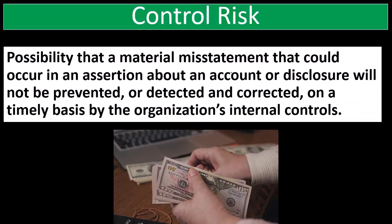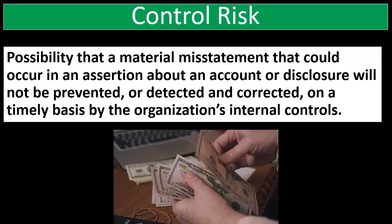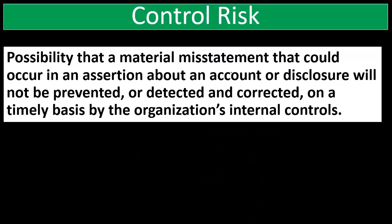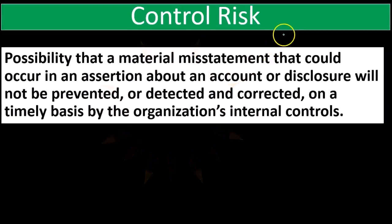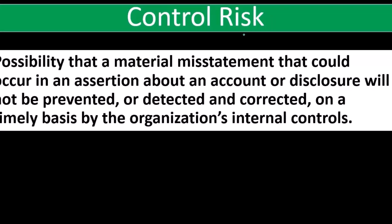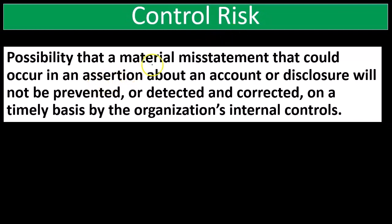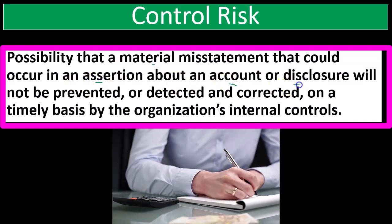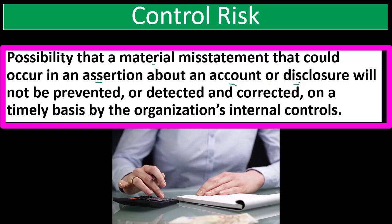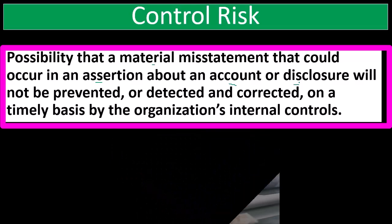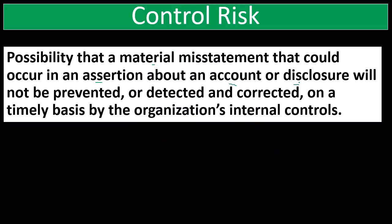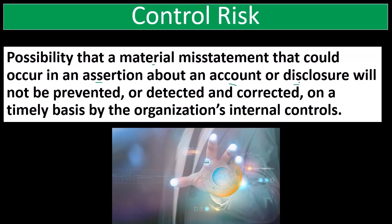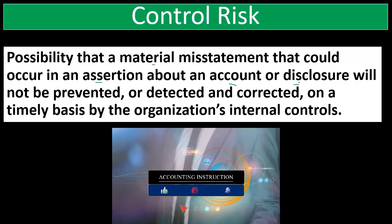Control risk is the possibility that a material misstatement that could occur in an assertion about an account or disclosure will not be prevented, detected, or corrected on a timely basis by the organization's internal controls. Now we're putting the controls back in place. At the account or disclosure level, what is the probability that the controls are not sufficient enough to catch any kind of misstatement?